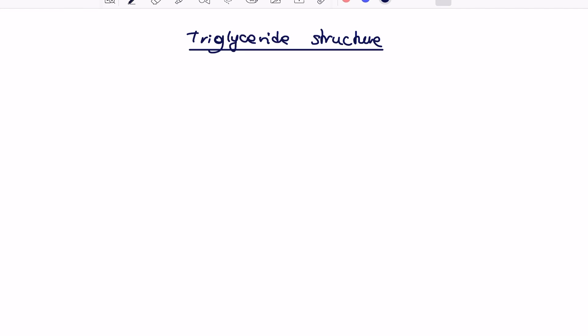Triglyceride is a form of a lipid. For A-level syllabus you need to know about the triglyceride and phospholipid, which I'll cover in the next video. Triglyceride structure consists of four components: glycerol and three fatty acids.